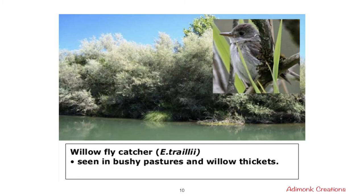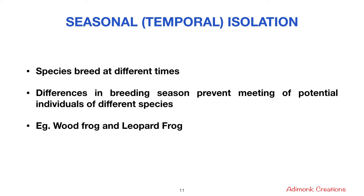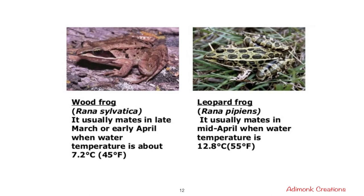The second type is seasonal or temporal isolation, where species breed at different times, so differences in breeding season prevent meeting of potential mates. For example, the wood frog (Rana sylvatica) usually mates in late March or early April when water temperature is about 7.2°C (45°F), whereas the leopard frog (Rana pipiens) mates in mid-April when the water temperature is around 12.8°C (55°F).